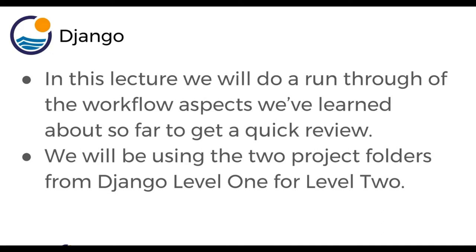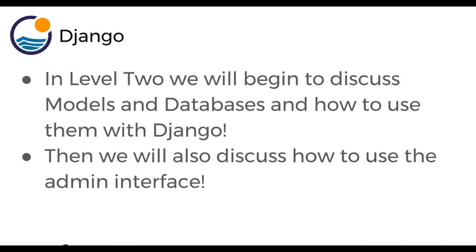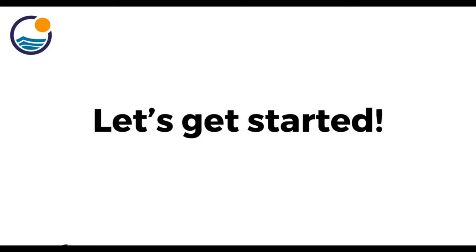We're going to be using the two project folders from Django Level 1 or Django Level 2. If you accidentally deleted those folders or don't have them anymore, you can always get them from the downloaded notes. In Level 2 we will begin to discuss models and databases and how to use them with Django. We're also going to be discussing how to use the admin interface. Before we do that, let's get started with a quick overview of Django Level 1, and then in the next lecture we'll get started with the Django Level 2 topics. I'm going to hop over to the editor now.